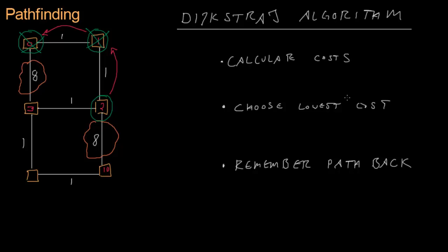Now we compare all weighted nodes: 3 versus 10. Obviously 3 is less than 10, so that becomes the current node. We remember the path back. Continuing: we calculate cost 3 plus 1 is 4. We choose the lowest cost — 4 is less than 10 — so we remove the others and remember our path back.